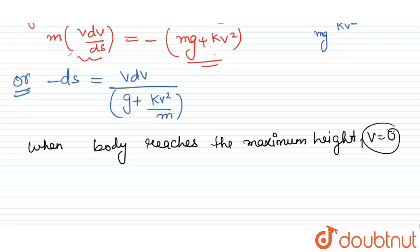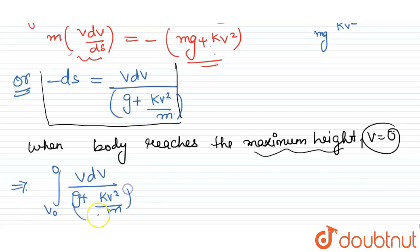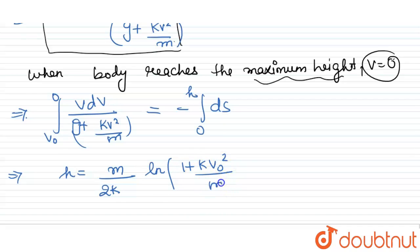When the body reaches maximum height, the velocity is zero. Integrating from v naught to zero on the left and zero to h on the right, we get: h equals m over 2k times log(1 plus kv naught square over mg). Let this be equation number one.